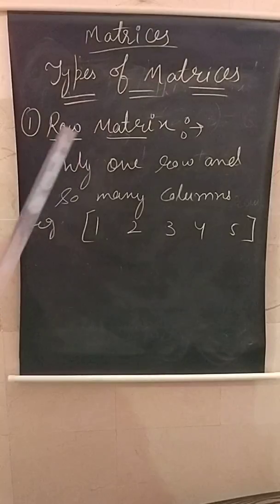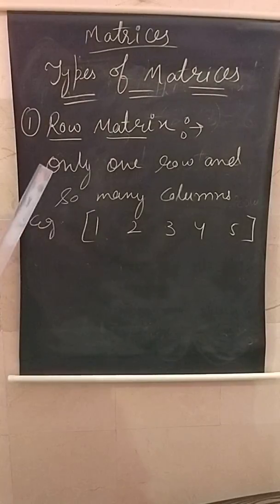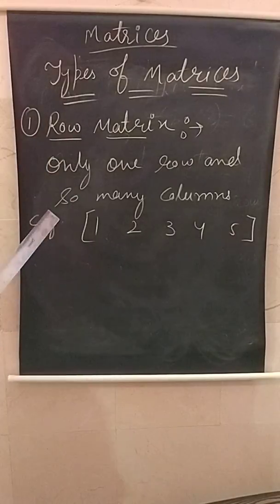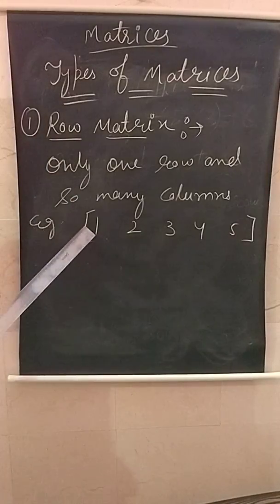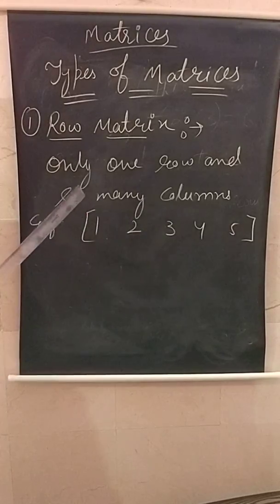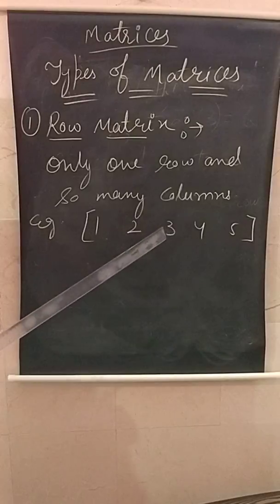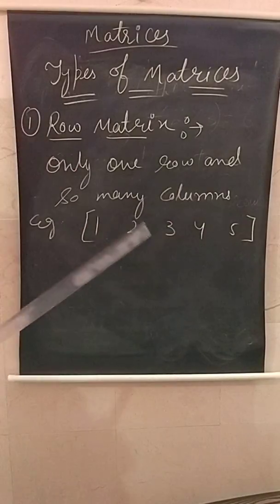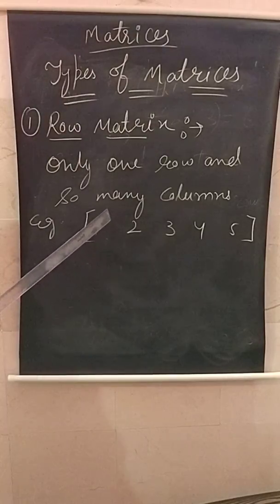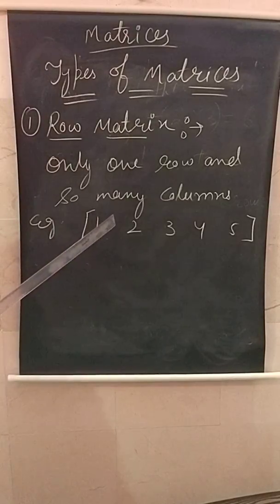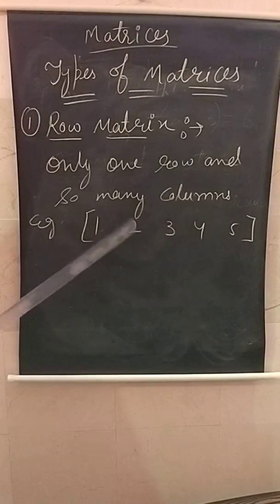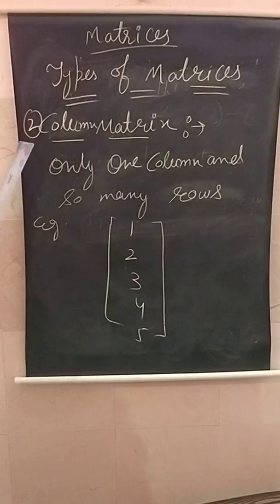Our next topic is types of matrices. The first type is the row matrix. A row matrix has only one row and so many columns, like elements one, two, three, four, and five across column one through column five. We can also introduce extra elements like four, six, seven, etc.